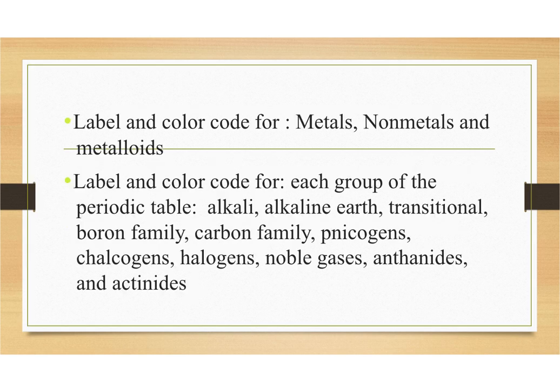Next, we're going to label and color code for metals, nonmetals, and metalloids. This is going to be extremely helpful when we start recognizing the various types of chemical bonds and when we start our nomenclature.